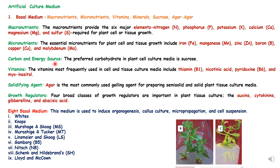The carbon or energy source utilized in artificial culture medium and tissue culture is sucrose. The vitamins most frequently used are thiamine, nicotinic acid, pyridoxin, and myo-inositol. The culture medium has to be semi-solid on which the plant is cultured, and the solidifying agent used is agar-agar, the most common gelling agent used in preparation of semi-solid medium.